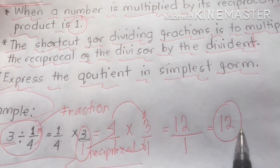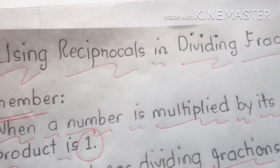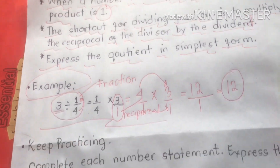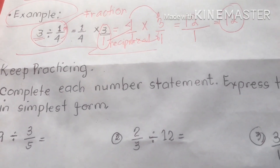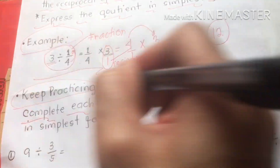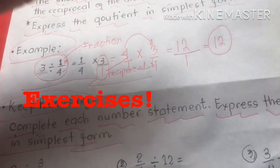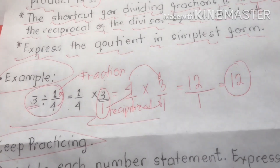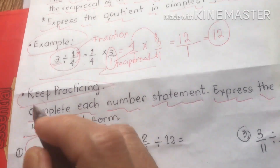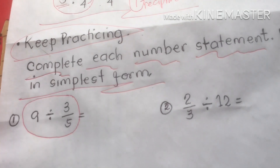We are going to present exercises to help students learn from our tutorial on dividing using reciprocals. Remember, constant practice will make us perfect. We're going to express our answers in simplest form. For number one, we have nine divided by three-fifths.